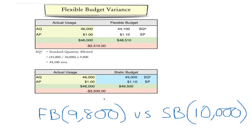A problem with the static budget variance is that it doesn't allow for the actual number of trucks manufactured. Suppose 9,800 trucks were actually manufactured — the budget suggests the company should have used 44,100 tires to produce them. We can do a flexible budget variance comparing the actual cost of tires, $46,000, with what it should have cost given that only 9,800 trucks were produced, yielding a favorable variance of $2,510.